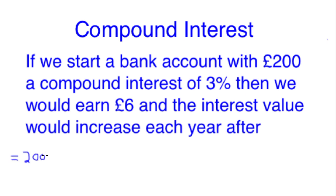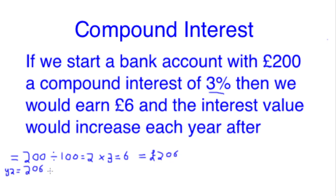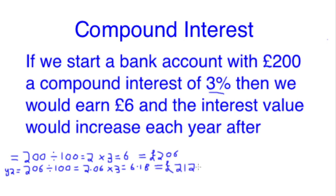To work out the compound interest this time we use exactly the same formula as we did before for simple interest, again giving us £206 as our total for year one. However, we have to recalculate in year two, taking into account the entire £206 — that's the interest added as well as the initial investment — which gives us £206 plus £6.18, giving us a total value of £212.18 for year two.